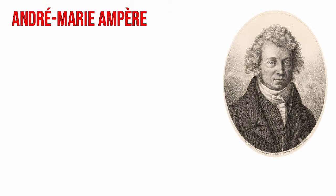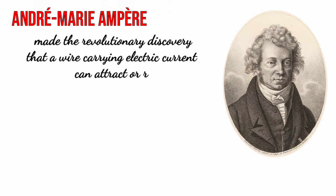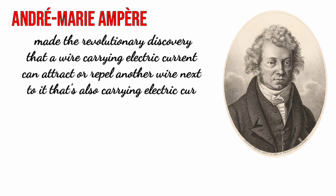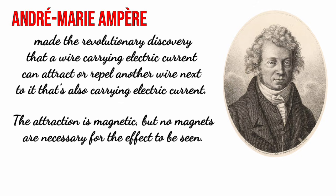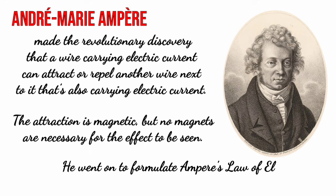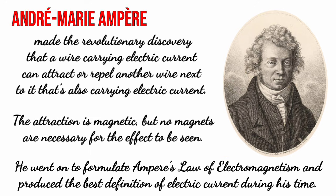André-Marie Ampère made a revolutionary discovery that a wire carrying electric current can attract or repel another wire next to it that is also carrying electric current. The attraction is magnetic, but no magnets are necessary for the effect to be seen. He went on to formulate Ampère's law of electromagnetism and produced the best definition of electric current during his time.